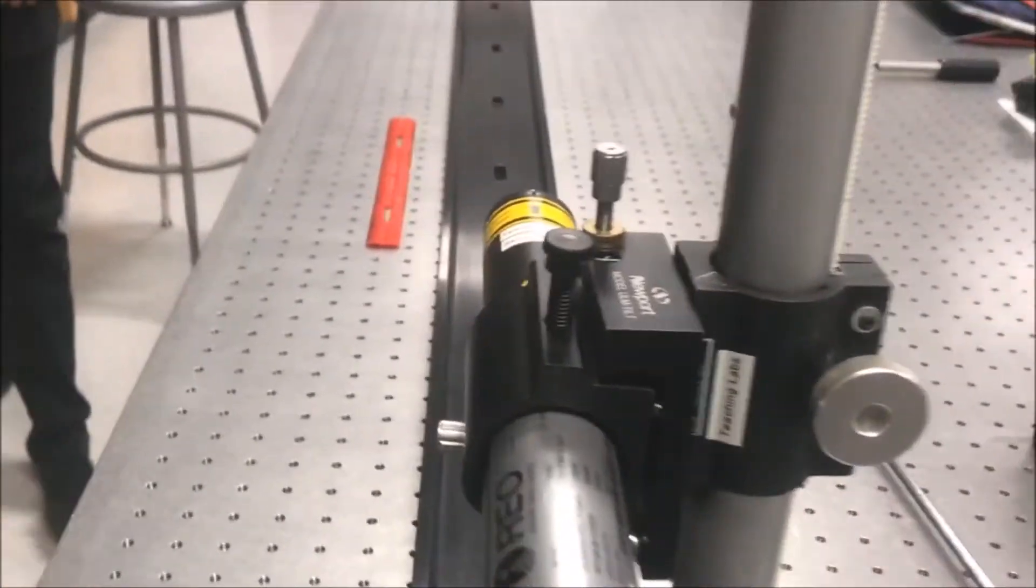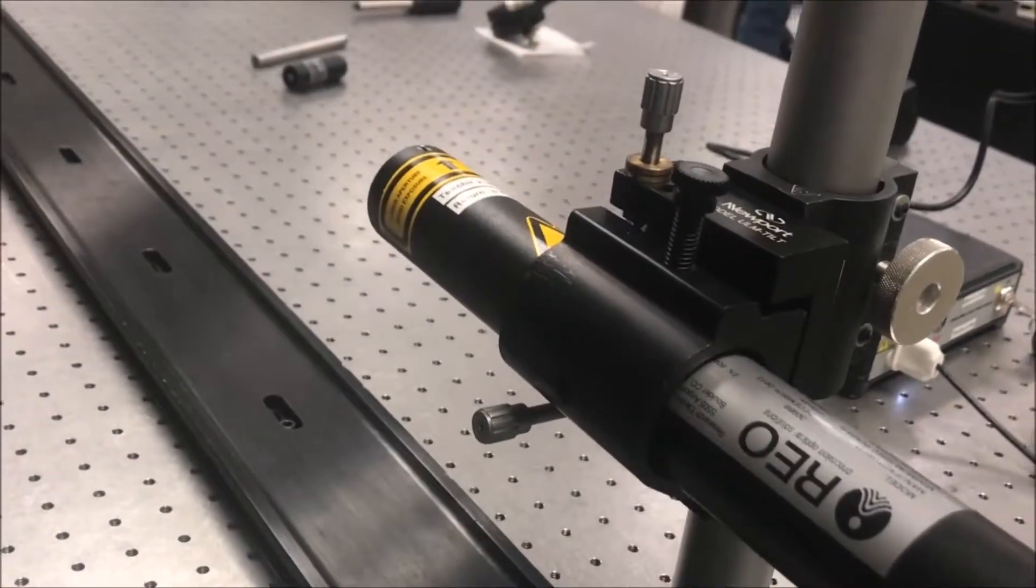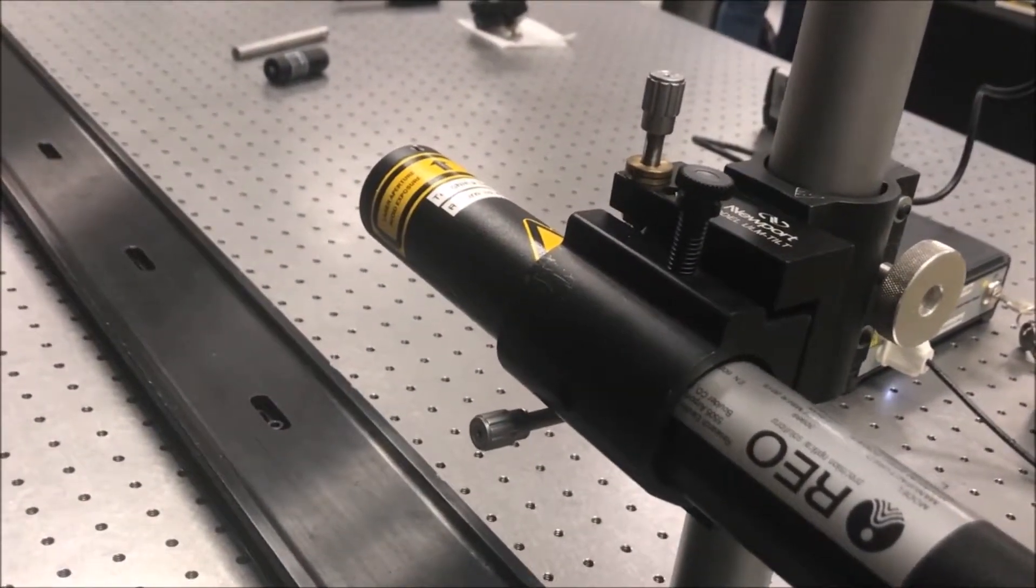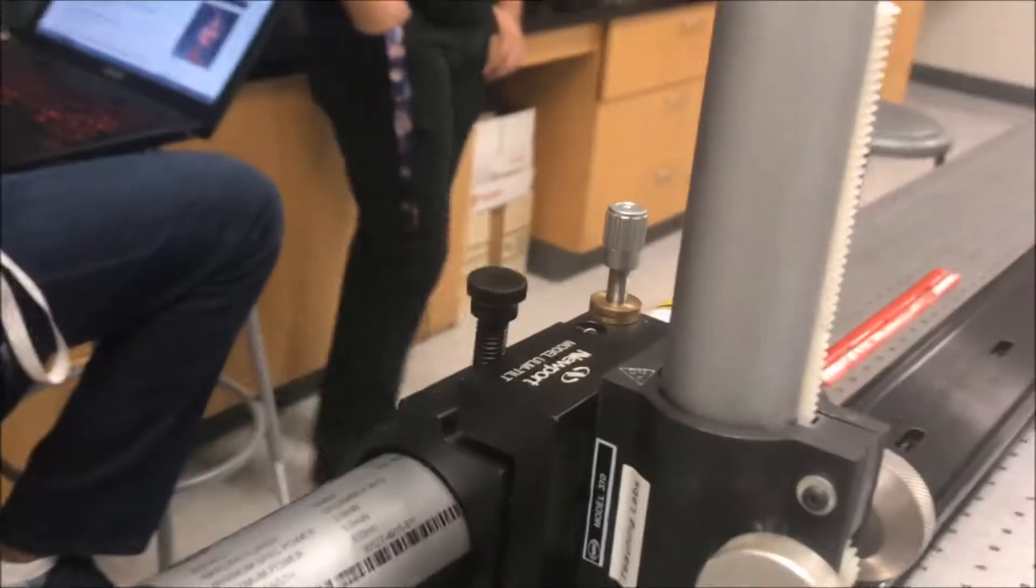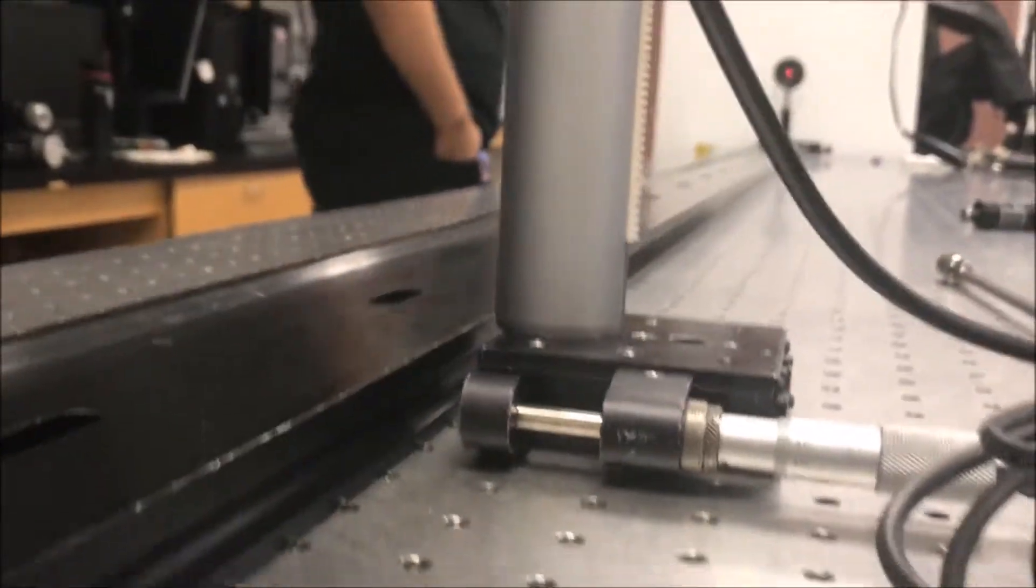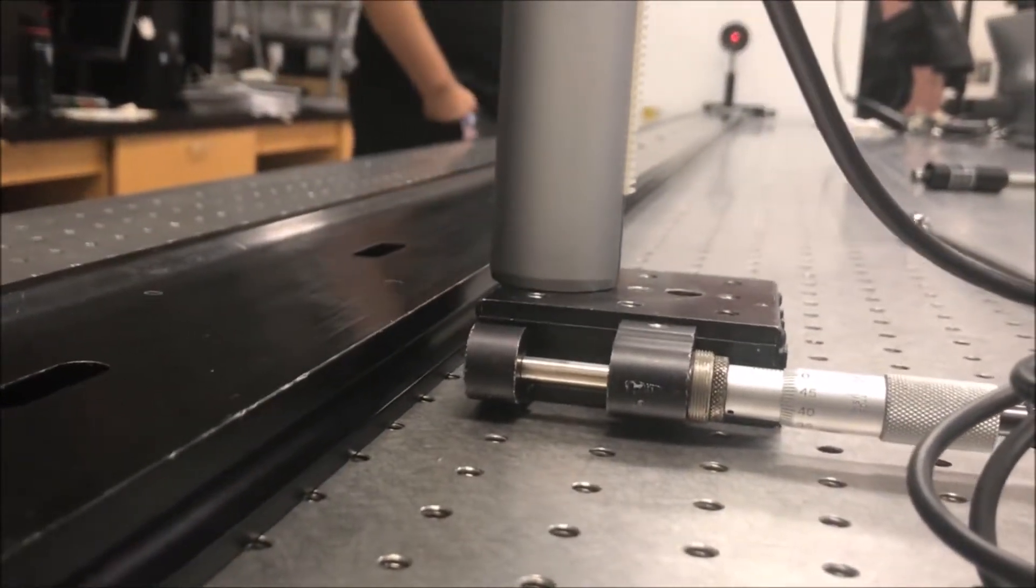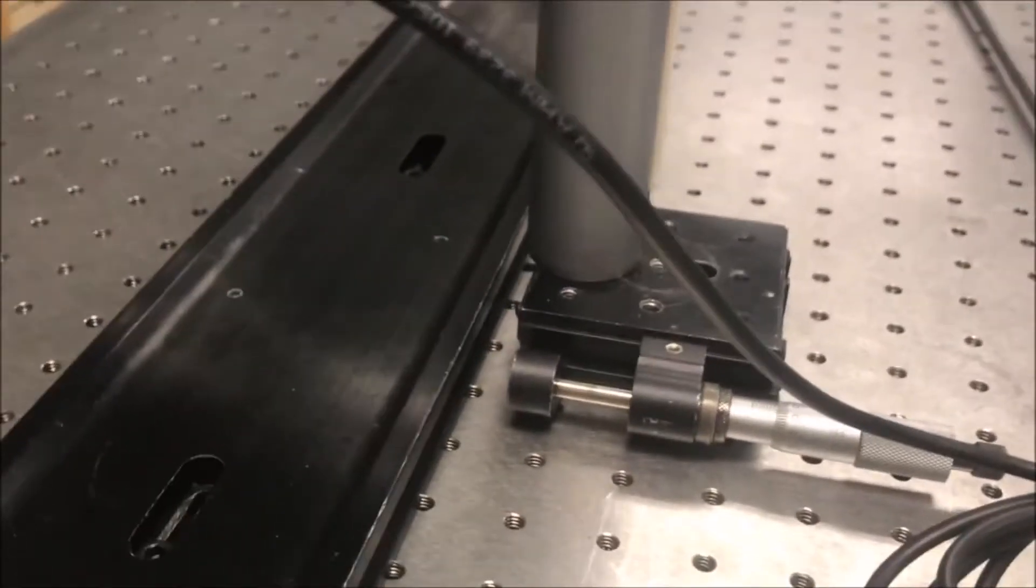The degrees of freedom that we tried to control here: you can see that we have the tip, tilt, and the y positioning on this side over here, on this vertical part. And then we added x translation for another degree of freedom that we could control using this translation stage.